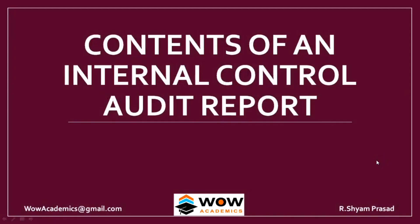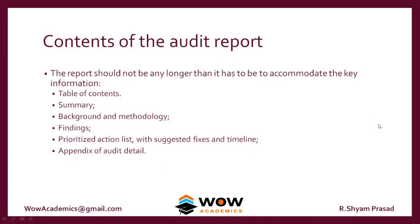Now we will move on to the contents of an internal control audit report — what does an internal audit report look like? Usually the contents include: a table of contents, summary, background and methodology, findings, a prioritized action list with suggested fixes and timeline, and an appendix of audit detail.